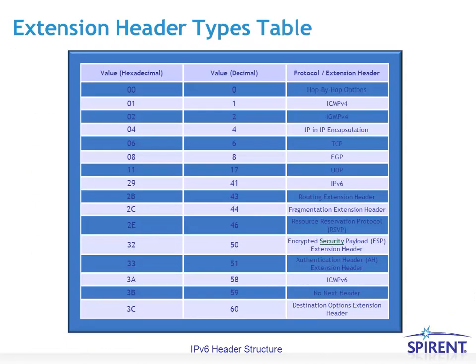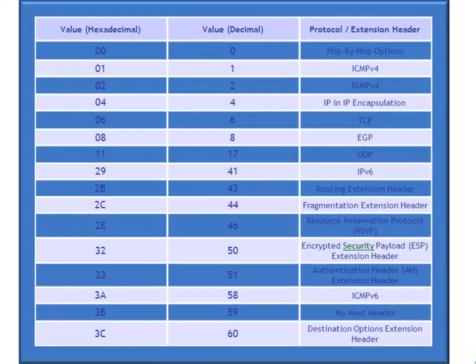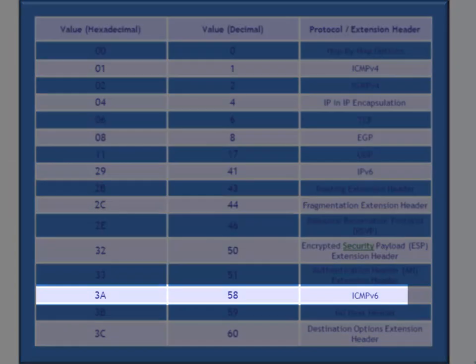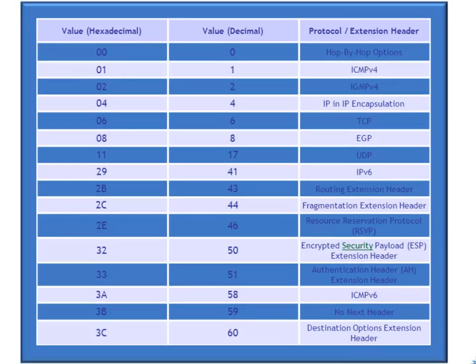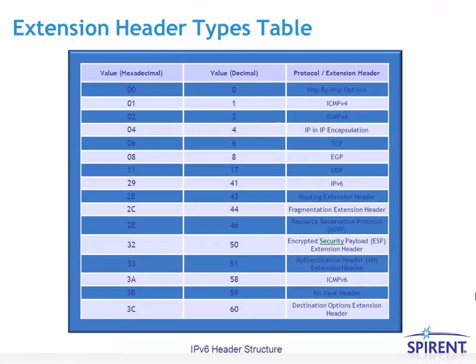Here's another view of the extension header types in table format, in both hexadecimal and decimal values. One thing to get used to seeing with IPv6 is the next header value of decimal 58, which is the value for ICMPv6 — Internet Control Message Protocol version 6. As we'll find out in a different topic in this Demystifying IPv6 course, ICMPv6 is used for a lot of processes with IPv6.